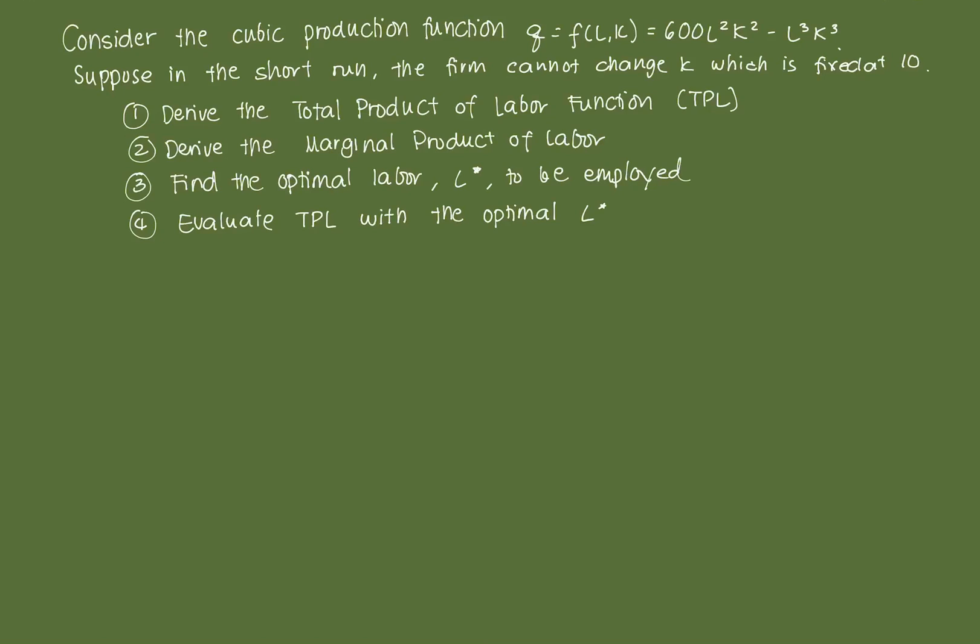In this video, we'll discuss an example on short-run production. In this case, we'll use a cubic production function given as this function here. Suppose we will be operating in the short run in which the firm cannot change the level of capital it used, which is fixed at 10 units of capital.